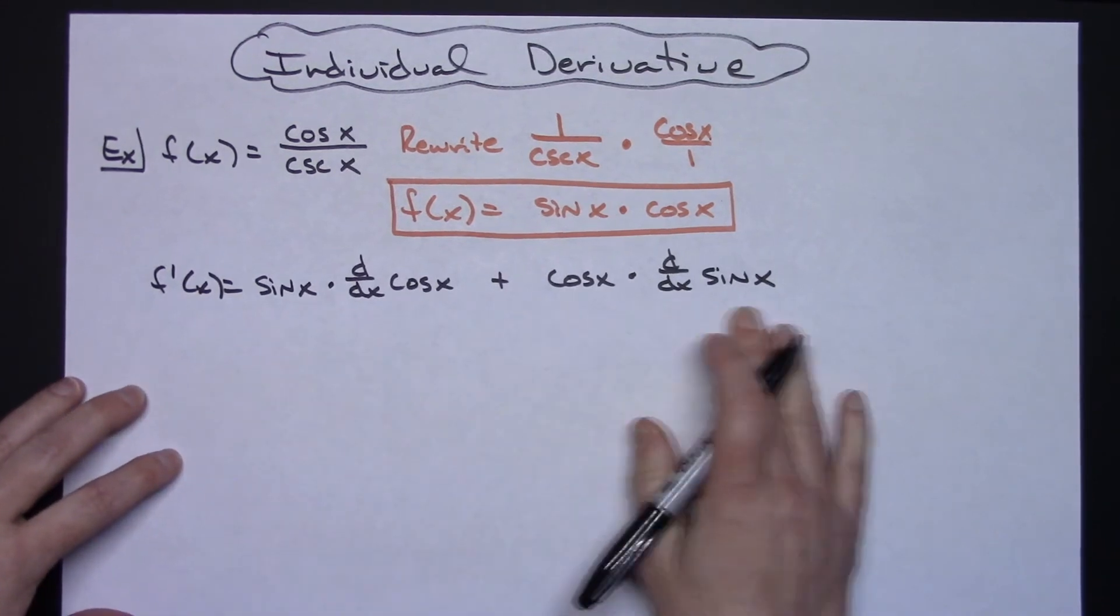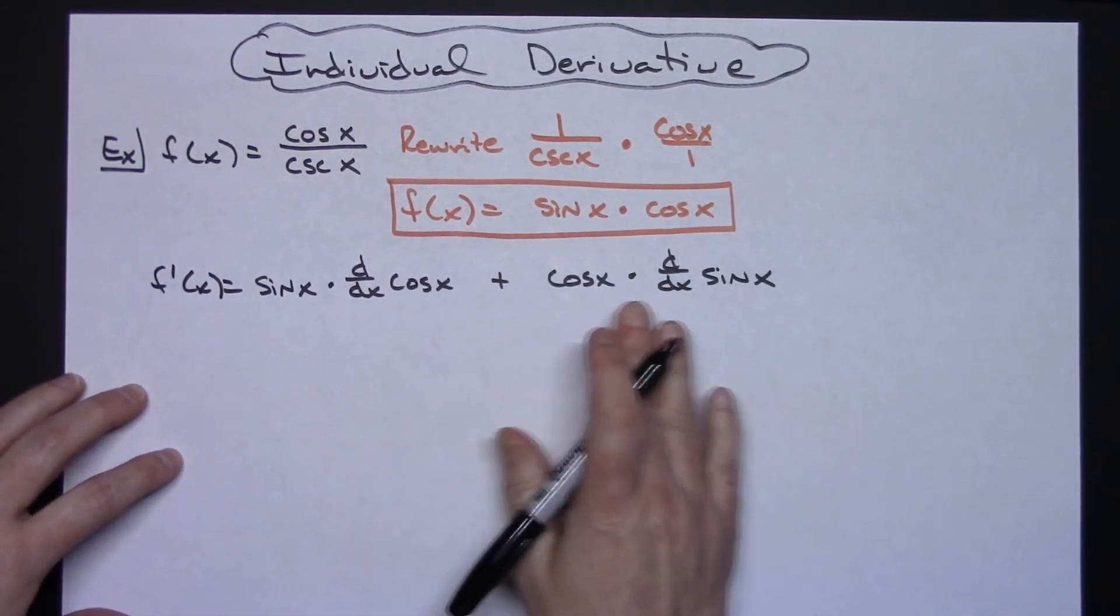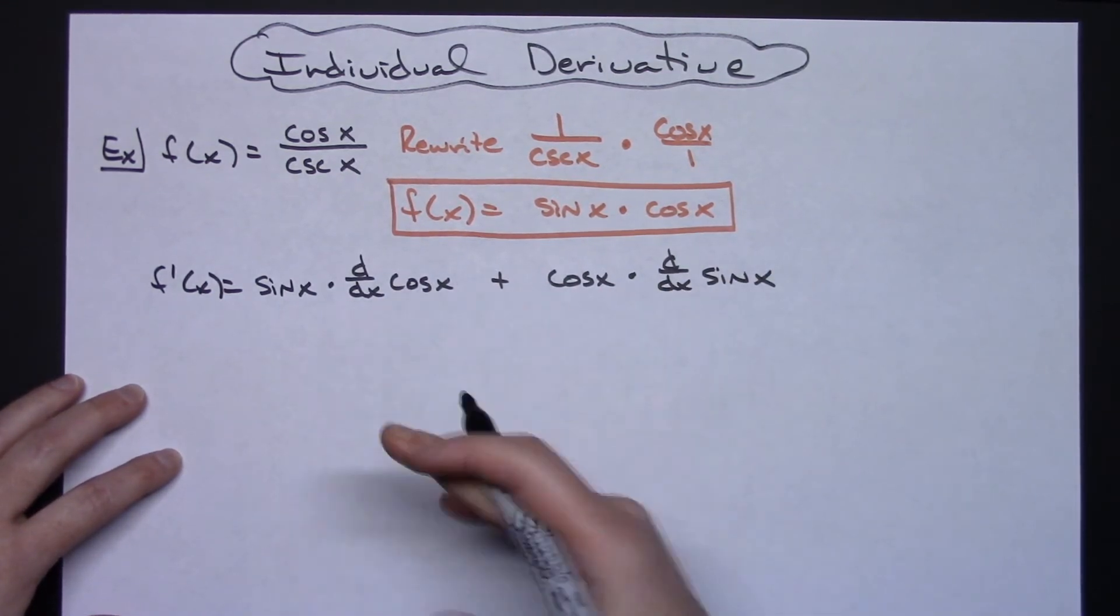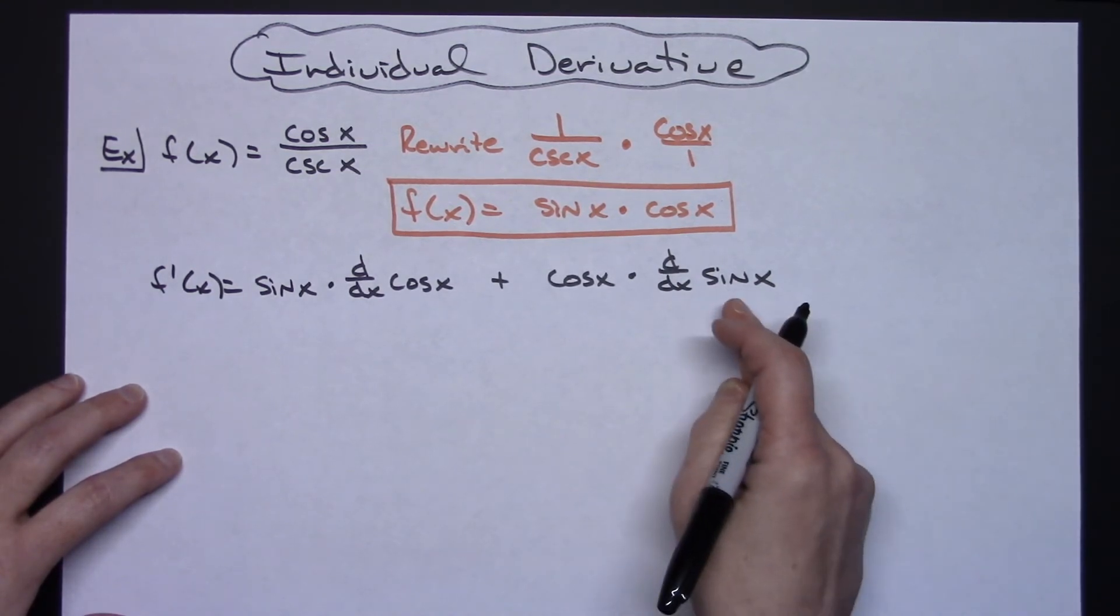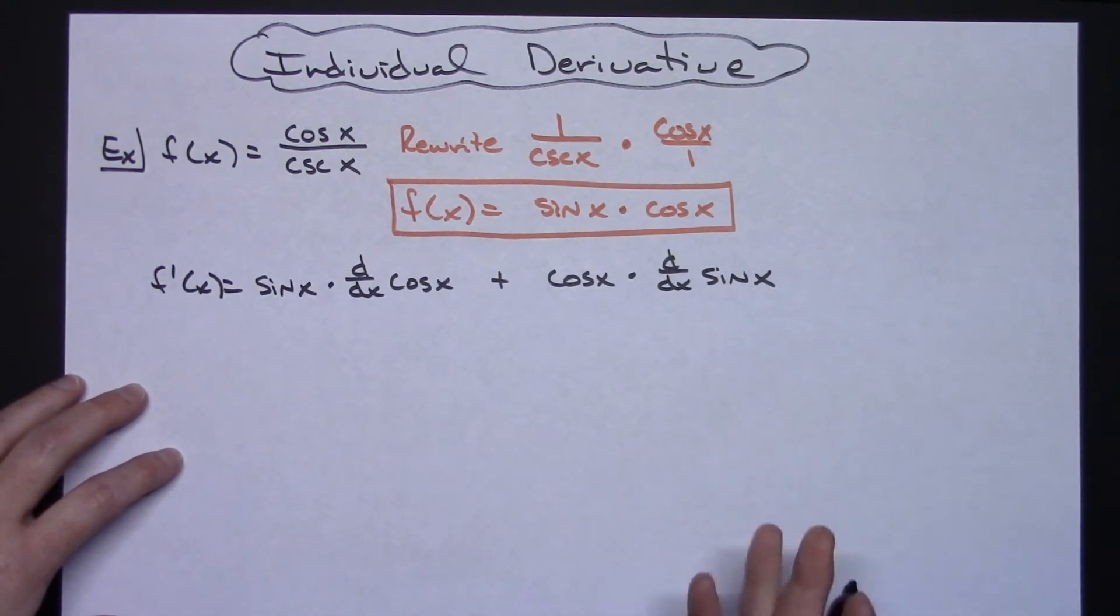The only reason I usually put that in, even though it's something as simple as this, is that definitely clearly shows the product rule. And then if these derivatives were harder derivatives, derivatives that maybe possibly included chain rule, then you would clearly be able to see that chain and hopefully not forget it.